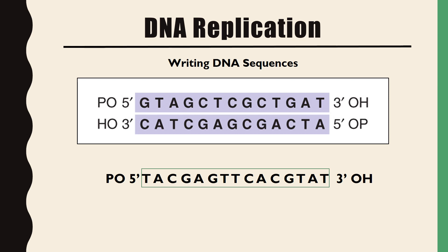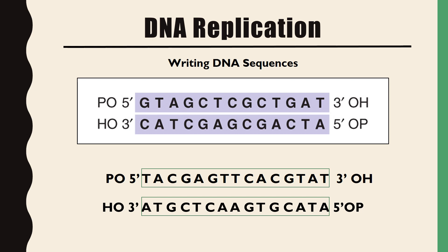As an example: if we have a strand reading 5' to 3' as TAC-GAG, we can determine the complementary strand. T binds to A and G binds to C, so writing the complementary strand from 5' to 3', we get ATA-CGT and so on. Remember you're reading the complementary strand essentially backwards.